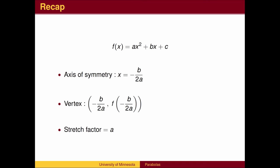To recap, the axis of symmetry and x-coordinate of the vertex is x equals negative b over 2a. The y-coordinate of the vertex can be found by plugging the x value back into the original equation. The parabola is then stretched vertically by a factor of a.